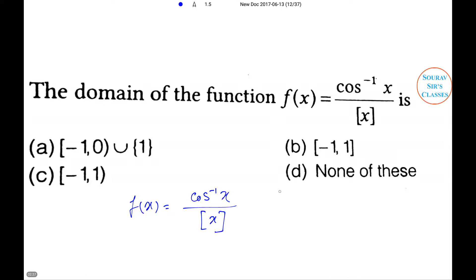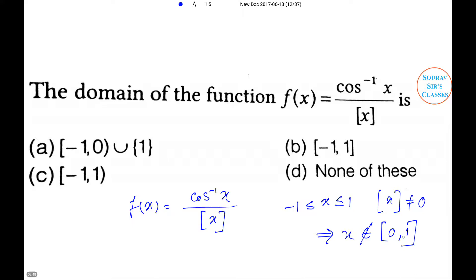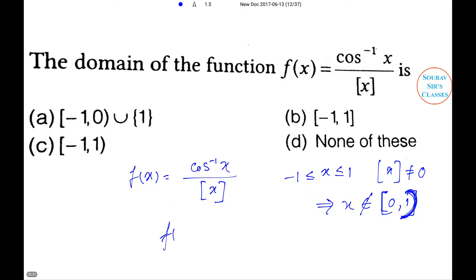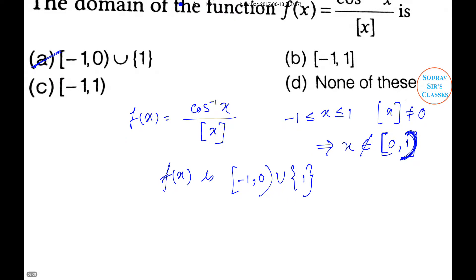Solution: For f(x) = cos⁻¹(x)/x to be defined, we need −1 ≤ x ≤ 1 and x ≠ 0. This implies x does not belong to 0, and the interval is closed at −1 and 1 but excludes 0. Therefore the domain of f(x) is [−1,0)∪(0,1], so option A is the right answer.